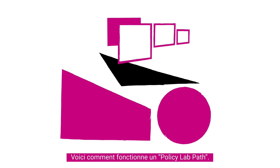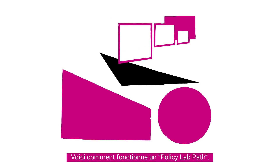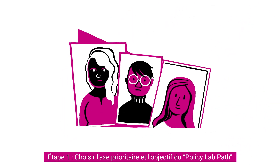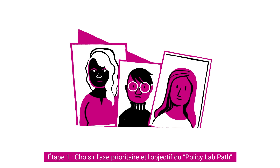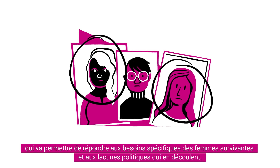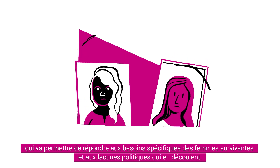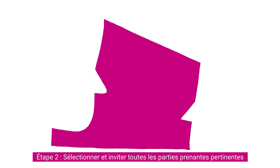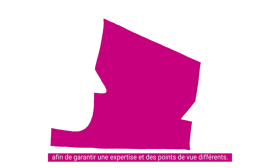Here is how a Policy Lab Path works. Step 1: Choose the focus and the purpose of the Policy Lab Path to address specific needs of women survivors and related policy gaps. Step 2: Select and invite all relevant stakeholders to ensure different expertise and viewpoints.